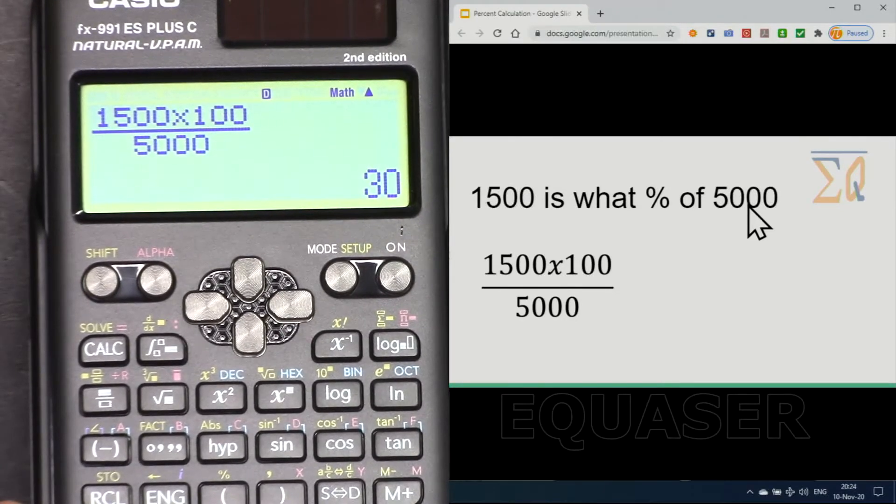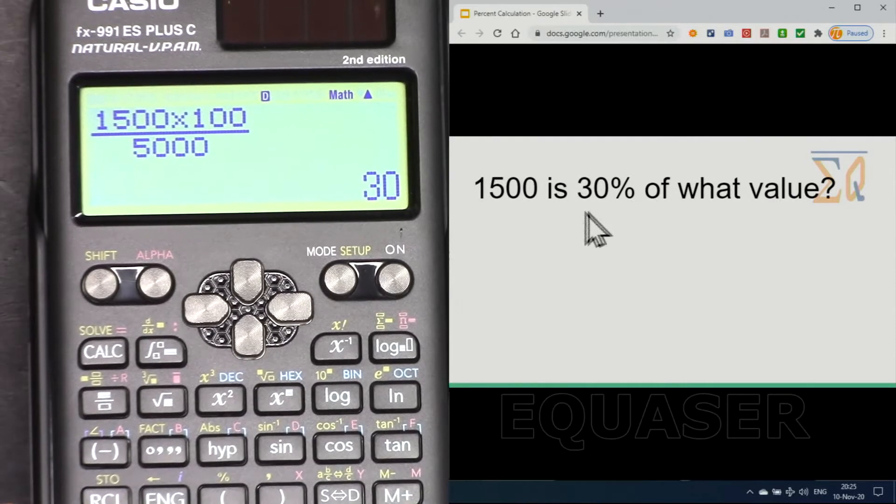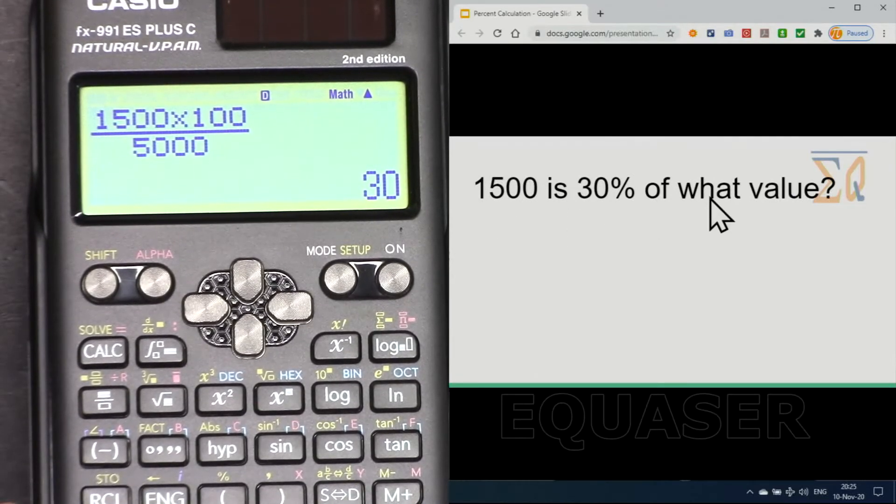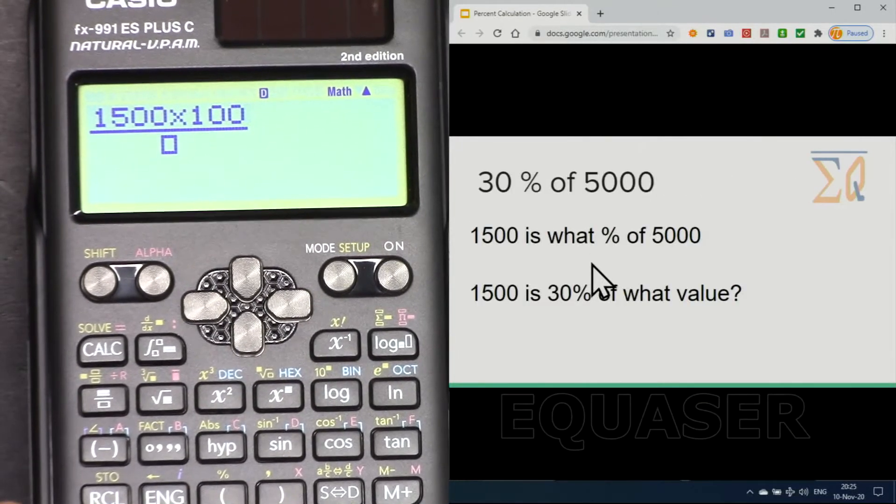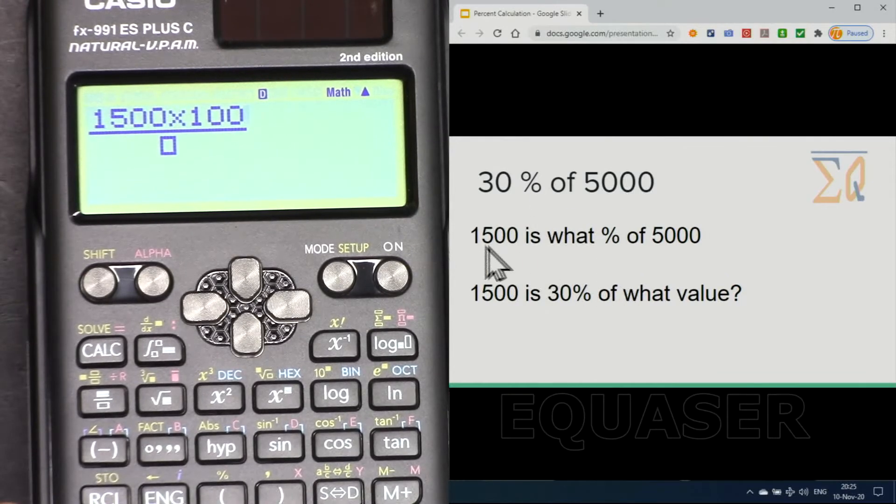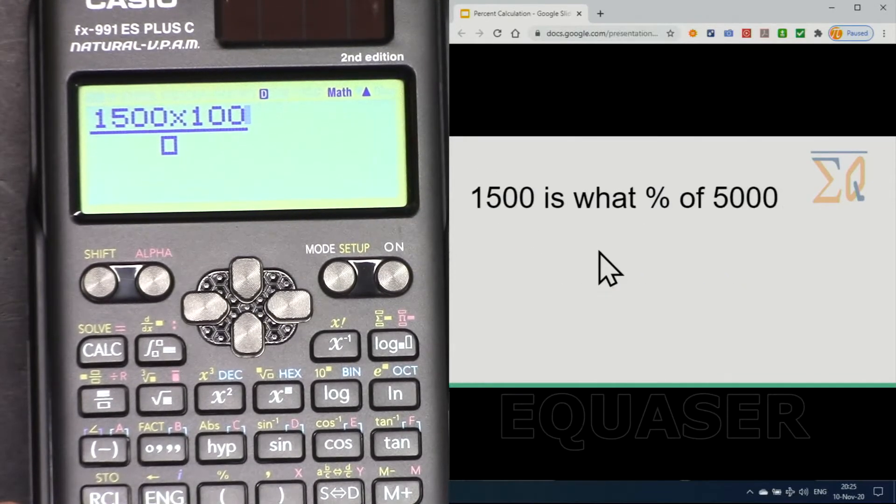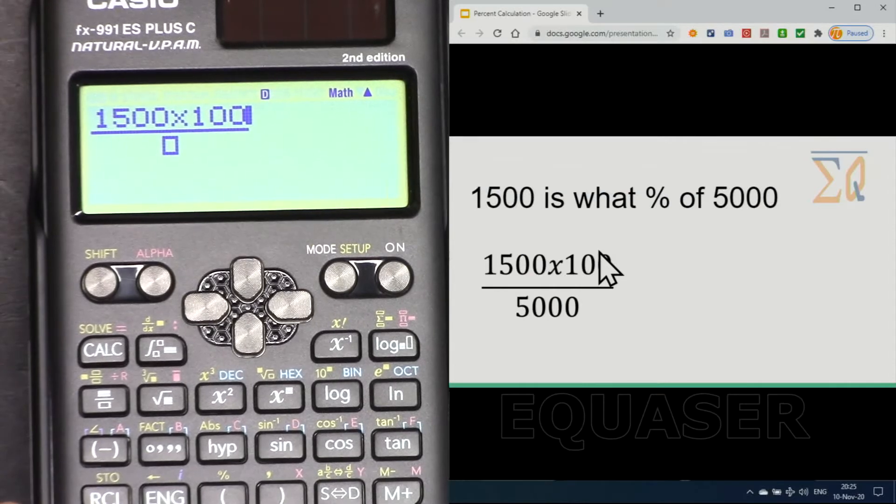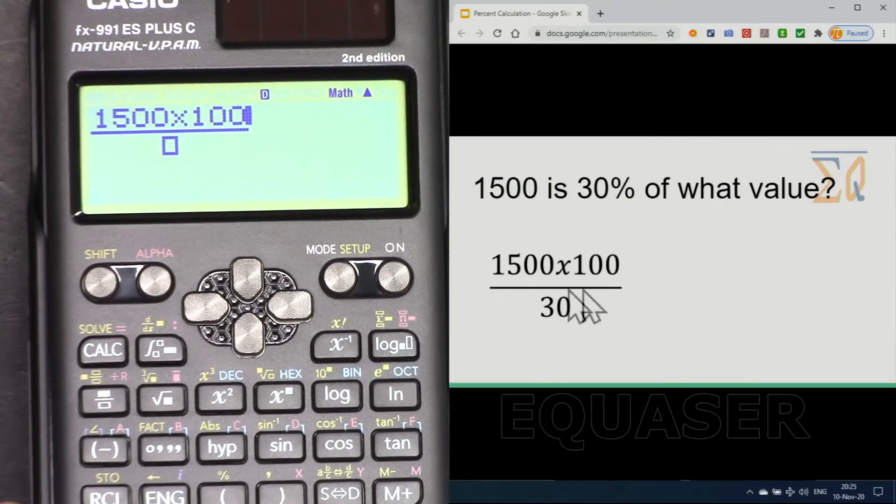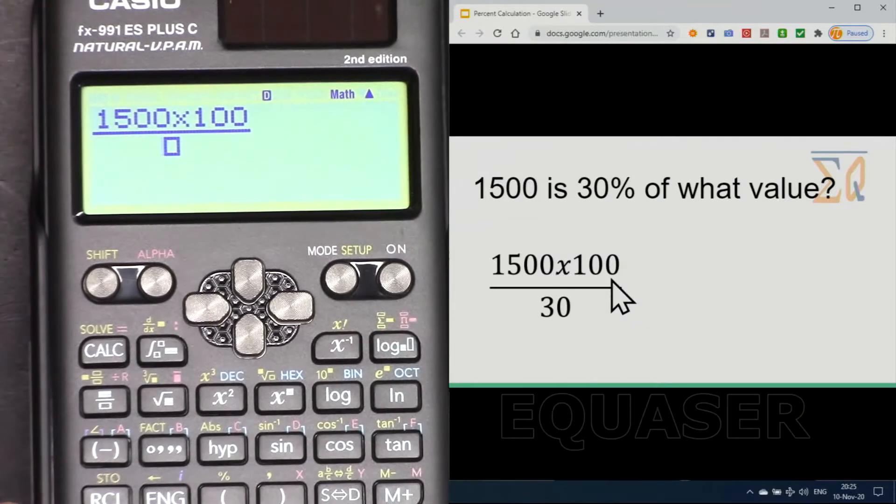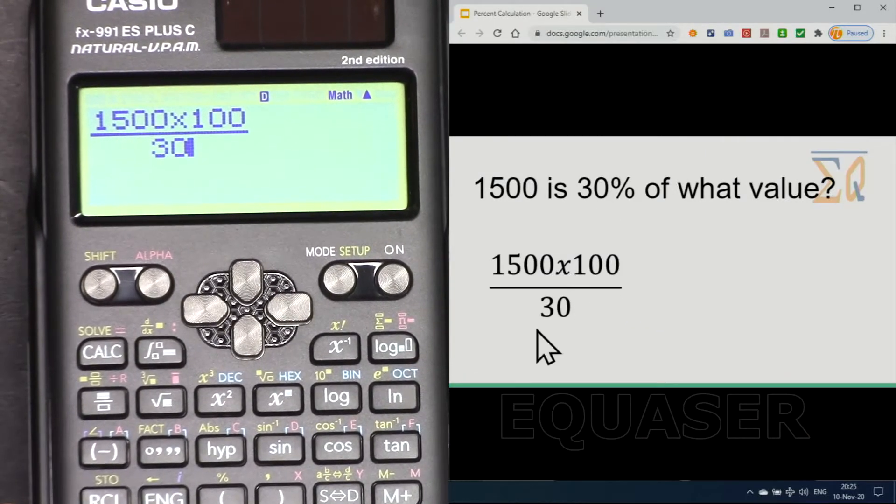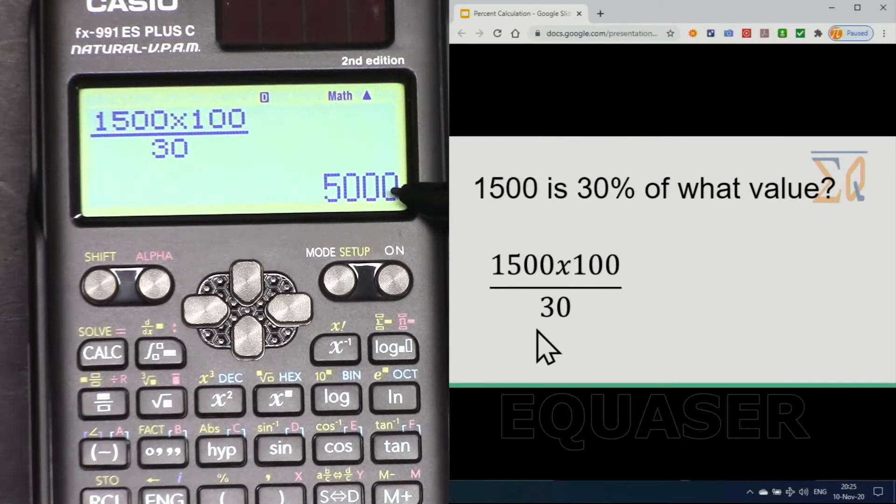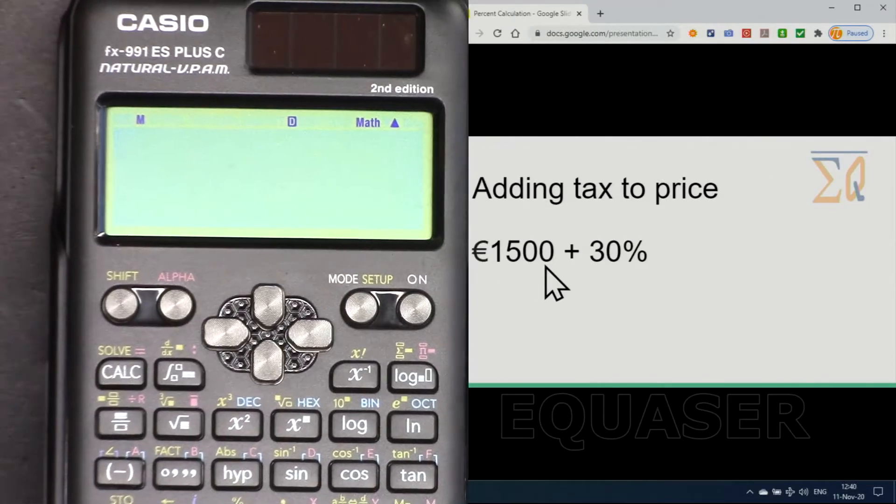And then, 1500 is 30% of what value? In that case, again 1500 times 100—to make it simple, for these two, 1500 is always multiplied by 100—so 1500 times 100 divided by 30, because this 30 that we have would be in the denominator. The answer is 5000.